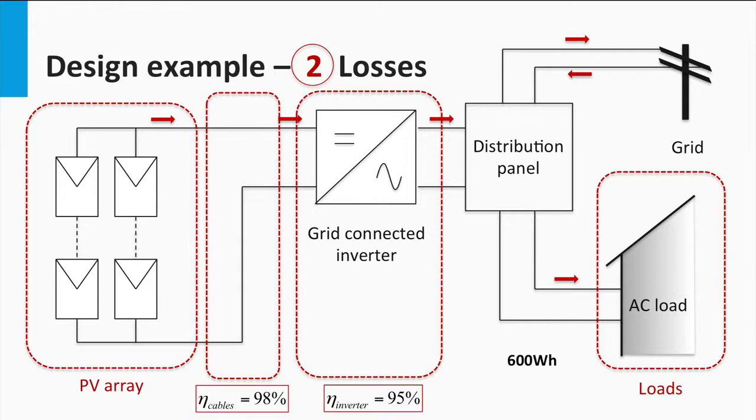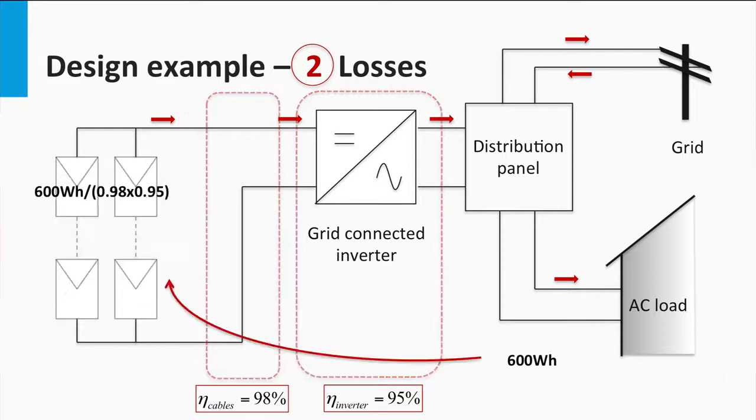Let us first account for the losses in the system. This would help us find the energy needed at the output of the PV array to successfully cover the daily load. Here we assume the same component efficiencies as we saw in the earlier example. That is, the cables have a transmission efficiency of 98% for the DC power and the grid-tight inverter shows an efficiency of 95%. We also see that the AC load at the inverter end demands a total of 600 Wh during the day. Given the system component efficiency, we can then calculate the equivalent energy required from the PV panels as shown. This is basically nothing but the transposition of the energy before all these losses occur. Therefore, the total energy requirement for the PV array is 644.5 Wh.